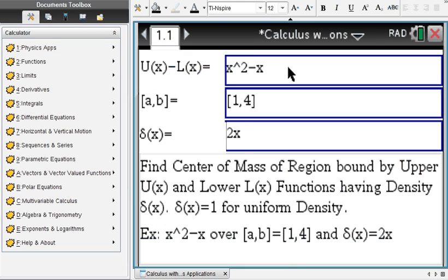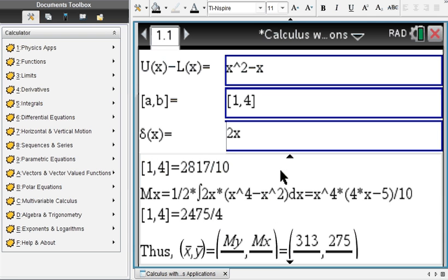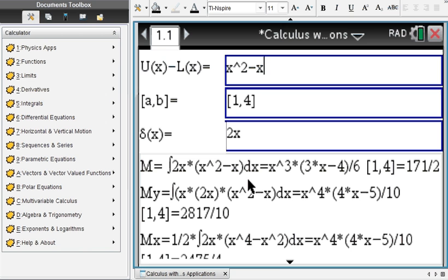So let's look at some specifics. We have here the center of mass in two dimensions. You enter your upper and lower function and your bounds and your density function, and you scroll up to see the setup of your integral, the integrand.